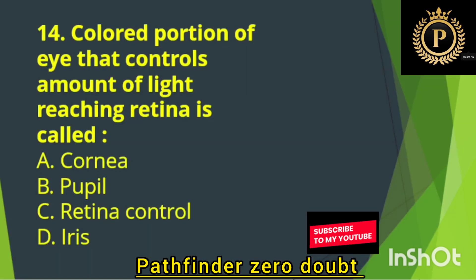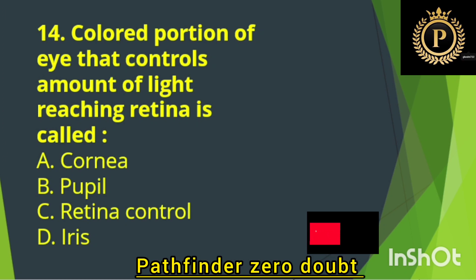The colored portion of the eye that controls the amount of light reaching the retina is called — Option D: Iris.